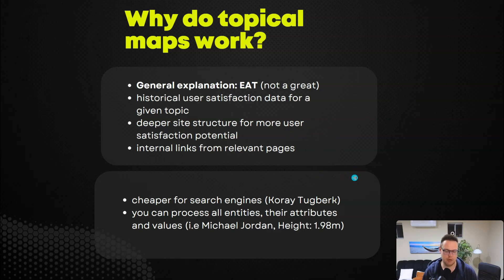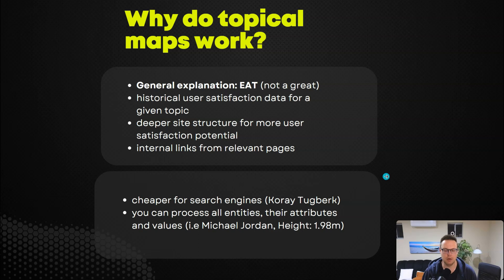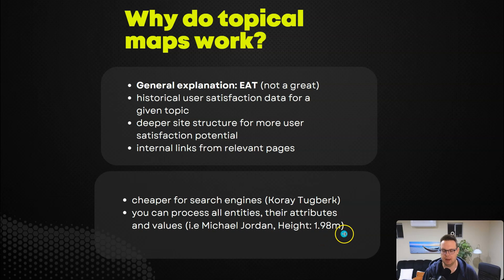It's also cheaper for search engines — a concept Koray Tugber has discussed. When Google can rank one website for millions of queries, like Healthline, that's cheaper than visiting three million different domains for each keyword. It also allows you to process all entities. When you have a well-laid-out topical map, you'll know the entities, attributes, and their values — the EAV model. For example: the entity is Michael Jordan, the attribute is his height, and the value is 1.98 meters.